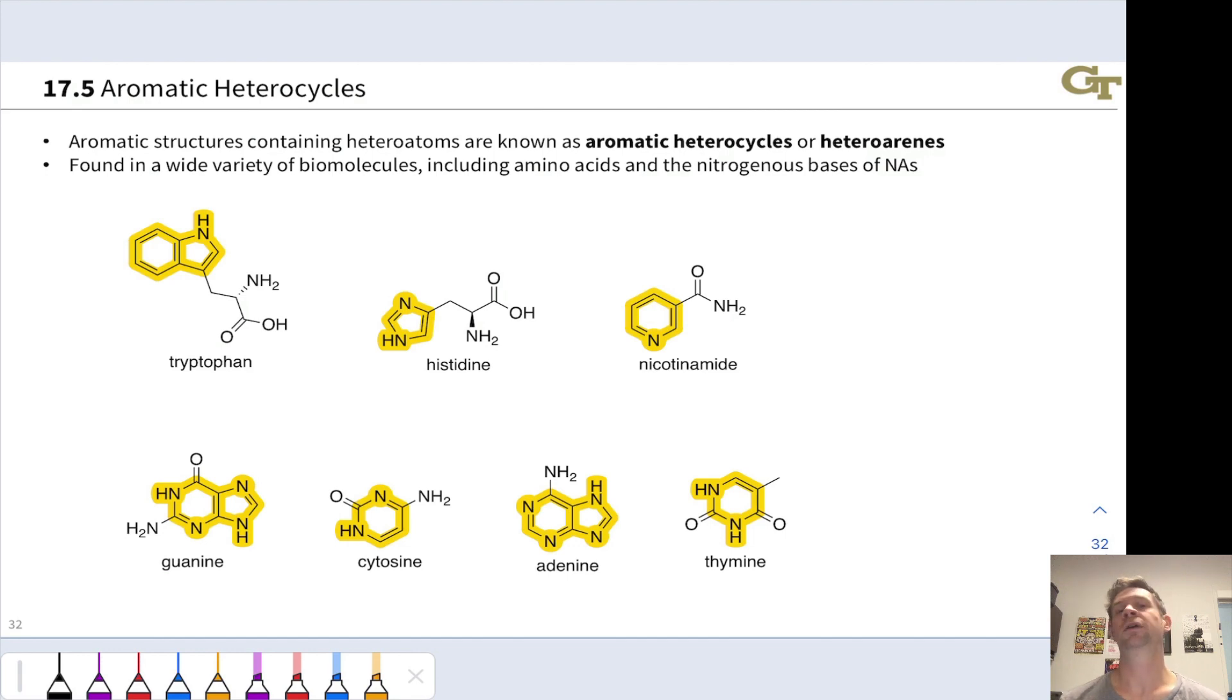This slide features compounds that are biochemical containing aromatic heterocycles. In the top left here, we see a five-membered ring containing nitrogen fused to a benzene ring. This whole system highlighted in yellow is known as the indole system. We have two nitrogens in this five-membered imidazole ring in histidine. These two compounds, tryptophan and histidine, are natural amino acids. The nicotinamide molecule contains what's called a pyridine ring, six-membered ring with nitrogen, very important because it's found in NAD+ and NADH. These are biochemical cofactors used for oxidation and reduction, respectively.